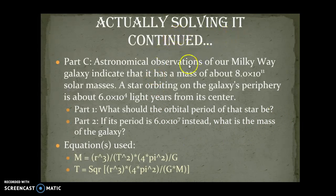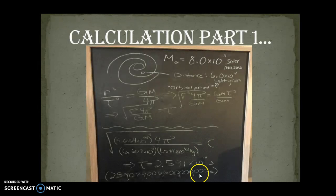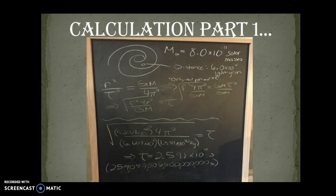Actually solving, continued. This is part C, which has to do with the galaxy periphery and the star orbiting it. So I didn't do this part actually, but this one I did: what should the orbital period of the star be. Equations used: instead of just solving for mass, I did it by period instead. So I solved for t, which took quite a bit of maneuvering actually.